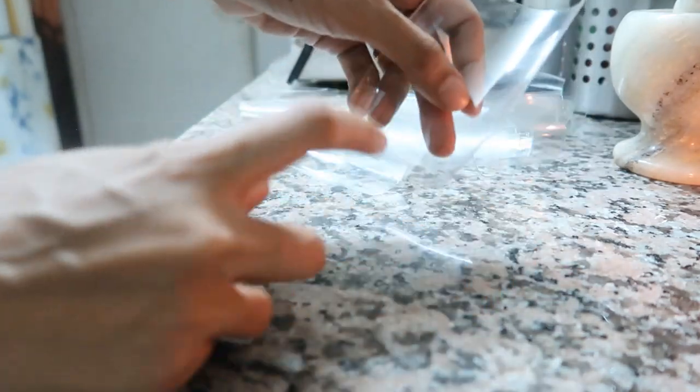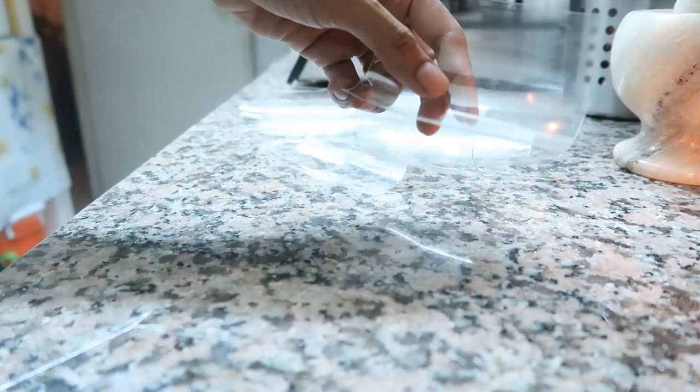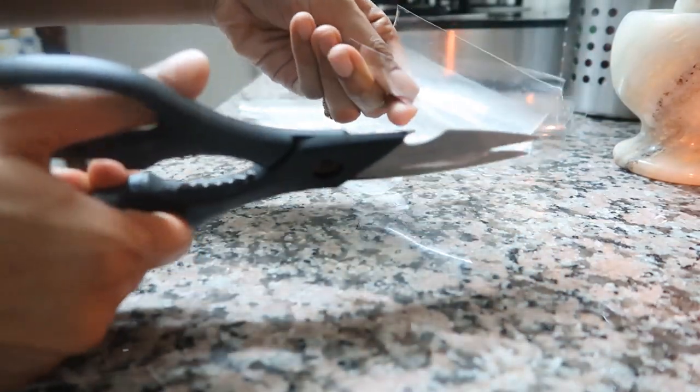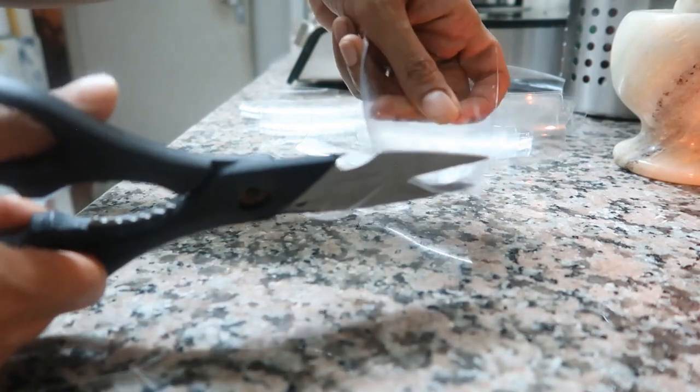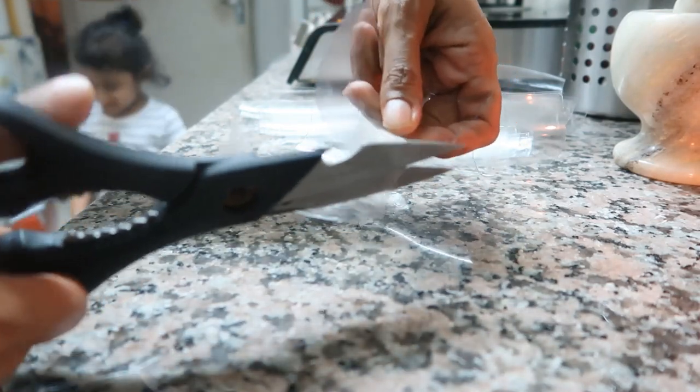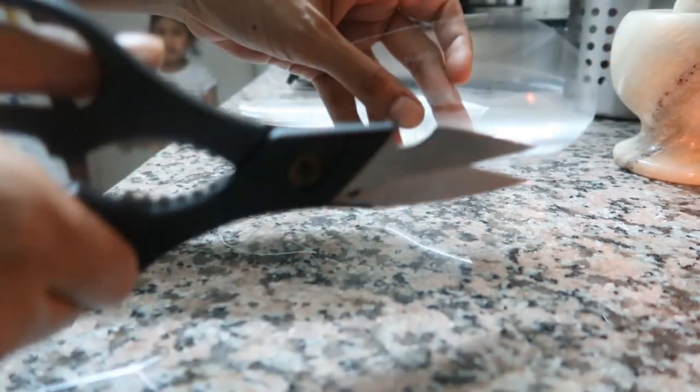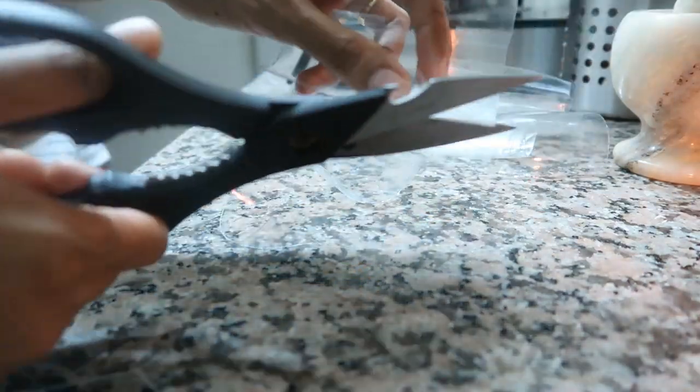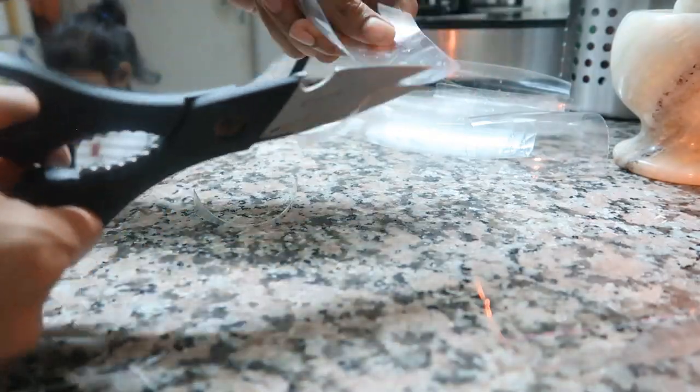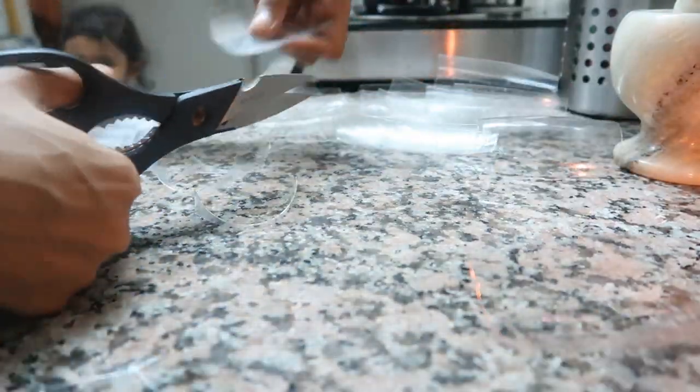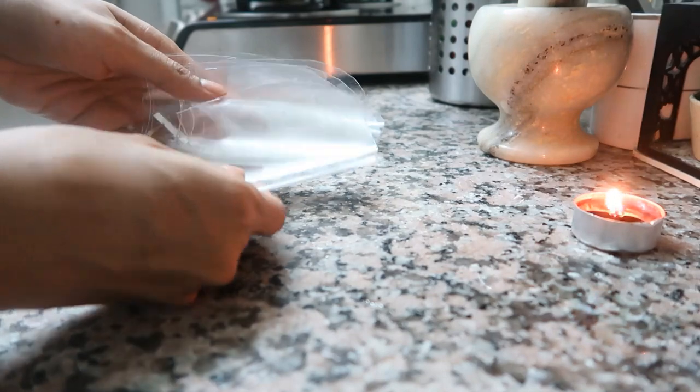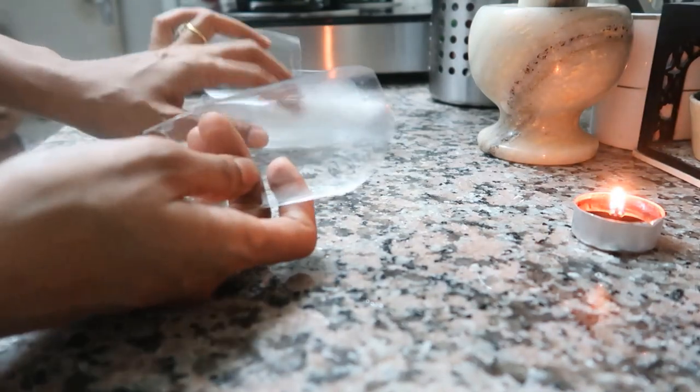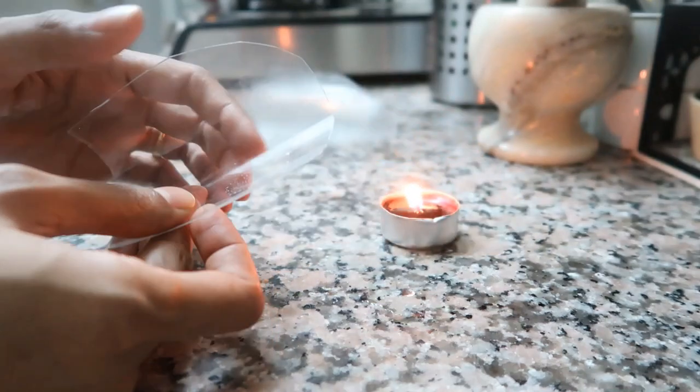Next, each piece we will be trimming the wide part into a curve form just as the petals. Repeat the process for all the pieces. Now here this is also ready and these are the petals for our flowers.